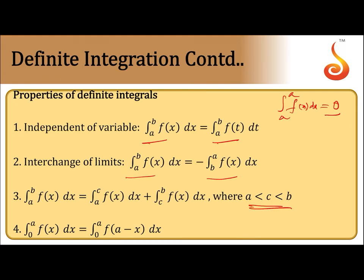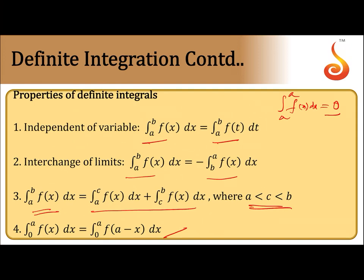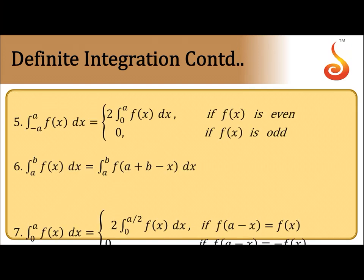For any intermediate point c in interval [a, b]: integral from a to b of f(x)dx can be split as integral from a to c plus integral from c to b of f(x)dx. Also, integral from 0 to a of f(x)dx equals integral from 0 to a of f(a-x)dx. Extended form: integral from a to b of f(x)dx equals integral from a to b of f(a+b-x)dx.